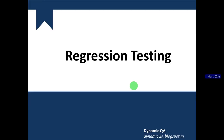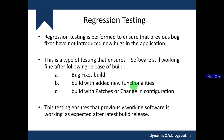Hello guys, welcome to Dynamic QA. Today the topic we are going to discuss is regression testing. This term might have come up while preparing for a QA role, QA interview, or QA job. In an ideal definition, regression testing ensures that bug fixes have not introduced new bugs into the application.